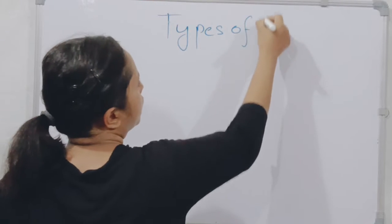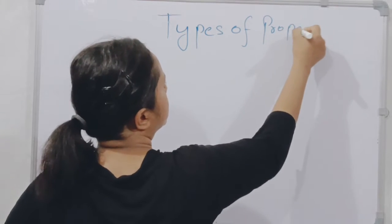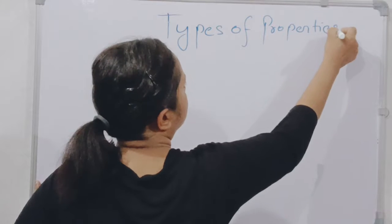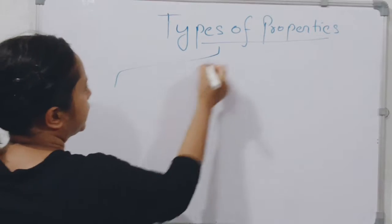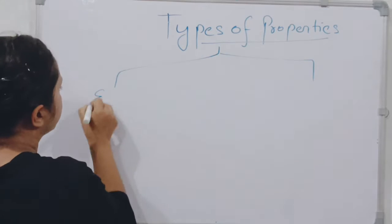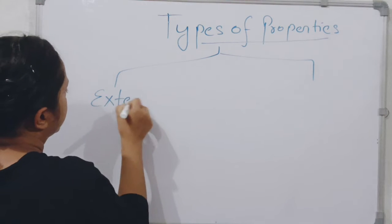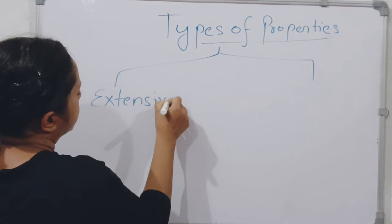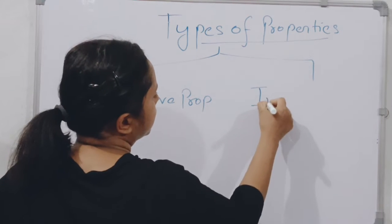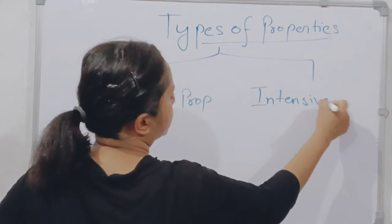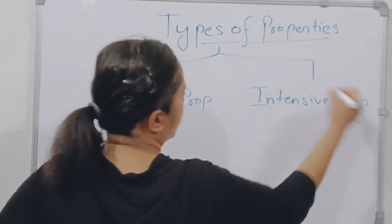So write down the heading: Types of Properties. Types of properties are of two types - first is extensive property, another one is intensive property.